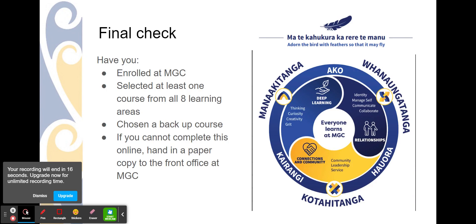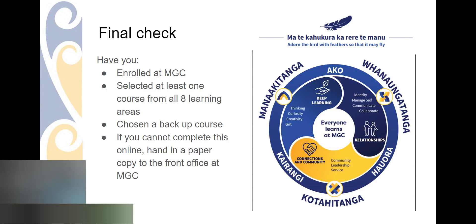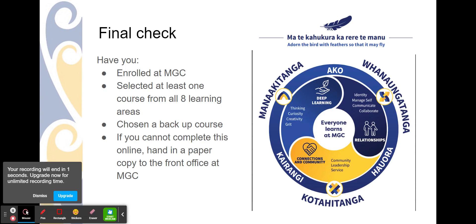Final check. Firstly, you won't be able to choose your courses unless you've enrolled. Select at least one course from all learning areas and take a backup. Don't panic. If you can't do it online, just hand in the booklet to our front desk. Annie will look after you.